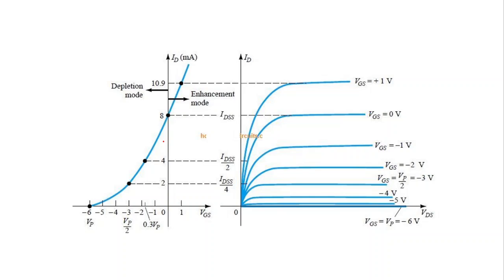Now we are going to see the transfer characteristics of the n-channel depletion type MOSFET. For VGS equal to 0 volt and also for negative VGS values, the transfer characteristics as well as the output characteristics are the same for the depletion type MOSFET and the junction field effect transistor.